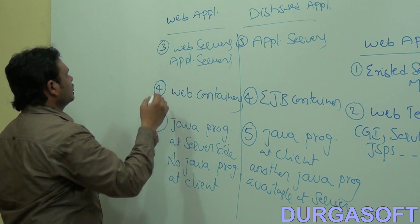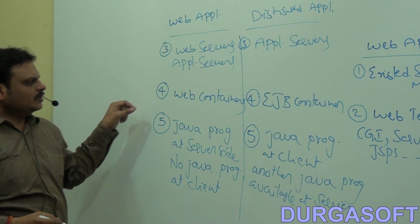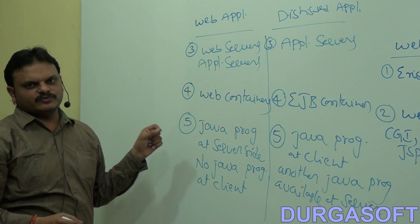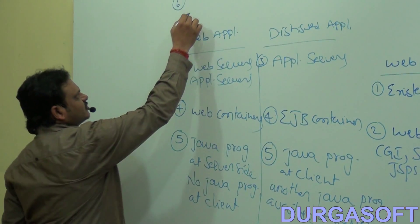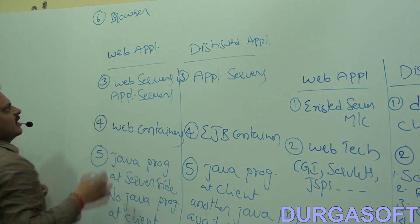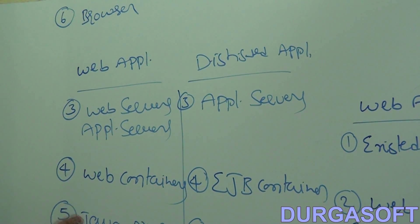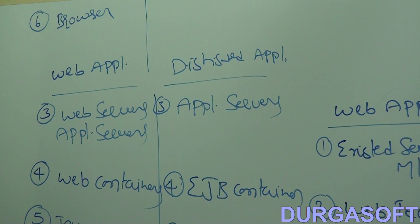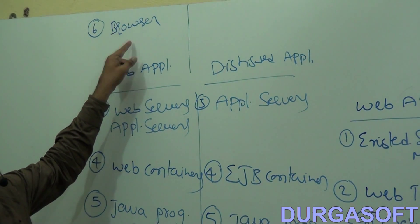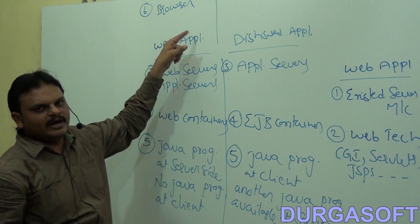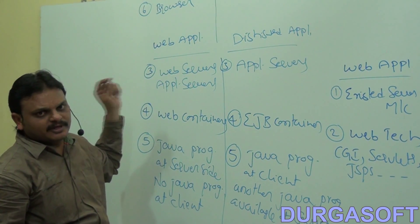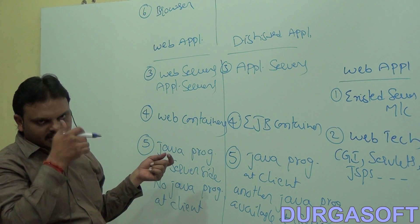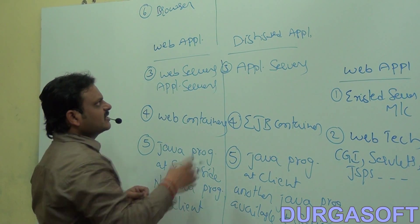The next difference: web applications will provide services for only web clients. The web client is a browser — web applications serve only the web browser. But distributed applications will provide services for any type of client; the client is not fixed in distributed applications.